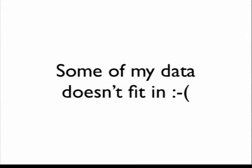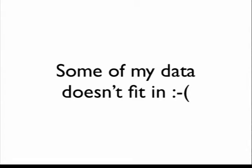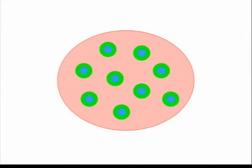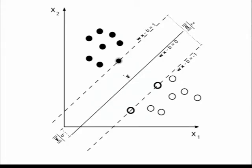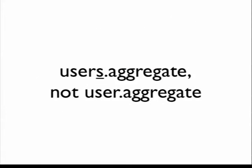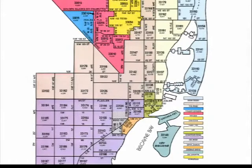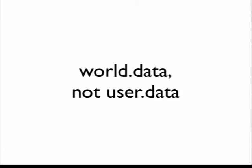Let me play devil's advocate and try to poke some holes in my own design. Something people have mentioned is that some data doesn't really appear to fit in. You have all these nice user stores and then bits and pieces of data that don't really belong to a user. For example, statistical analysis, machine learning, or aggregate data — it's users.aggregate, not user.aggregate; it doesn't belong to any individual user. Or encyclopedic data — in my case, I work a lot with geospatial applications, so that ends up being things like zip codes. The point is it's world.data, not user.data. It doesn't belong to any particular user, so where do I put it?